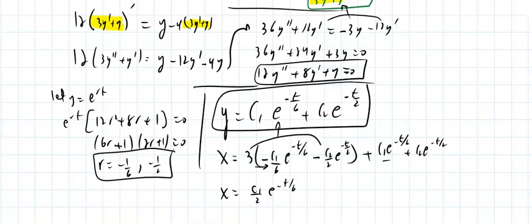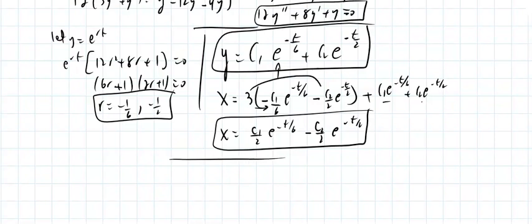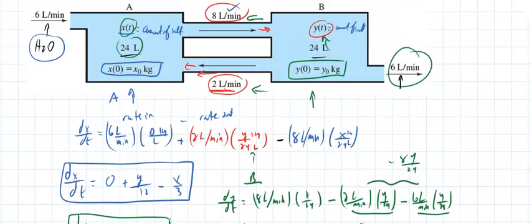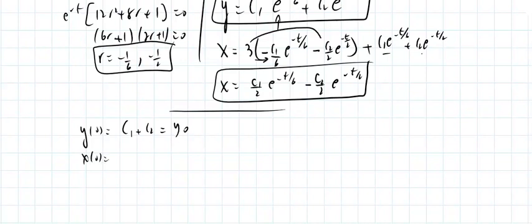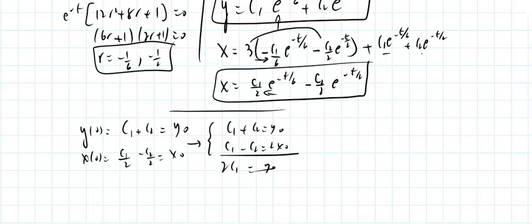Bringing in initial conditions: y of zero equals c1 plus c2 equals y naught, and x of zero equals c1 over 2 minus c2 over 2 equals x naught. So c1 plus c2 equals y naught, and c1 minus c2 equals 2x naught.